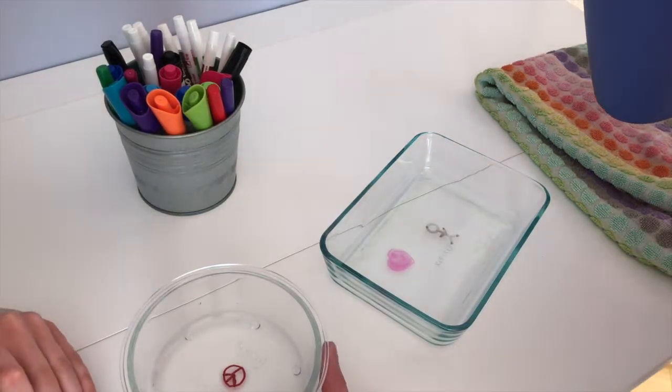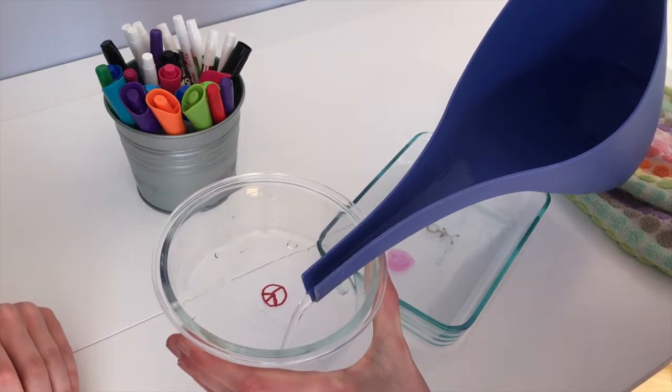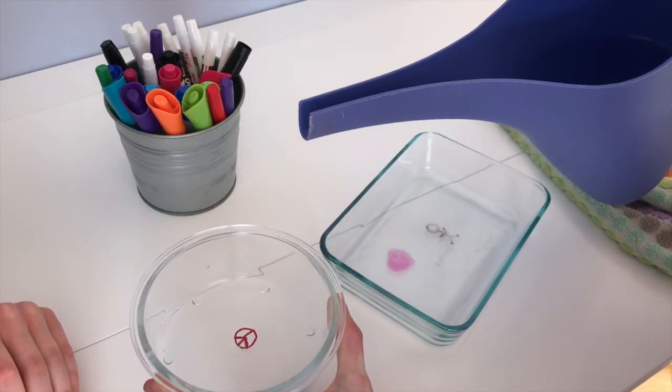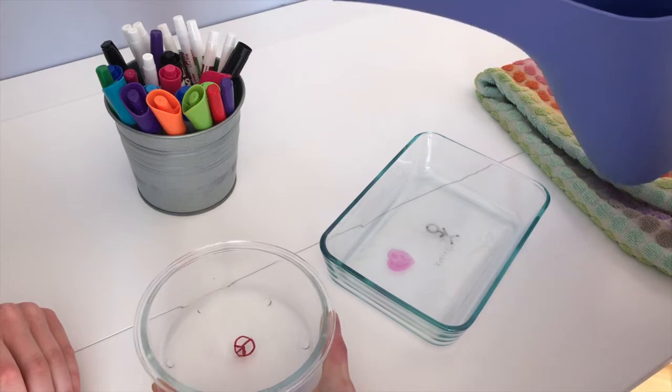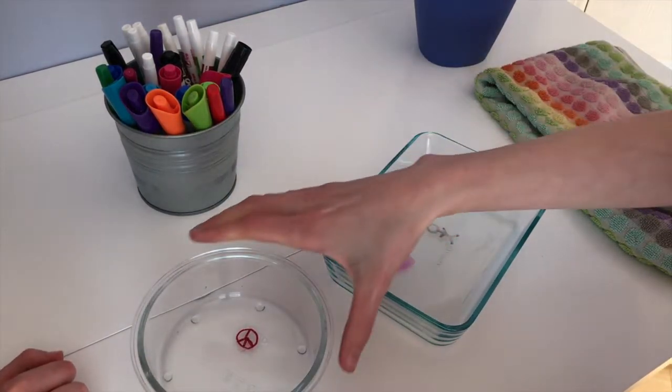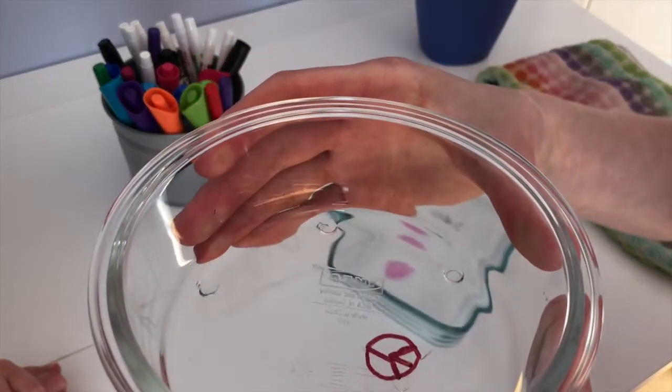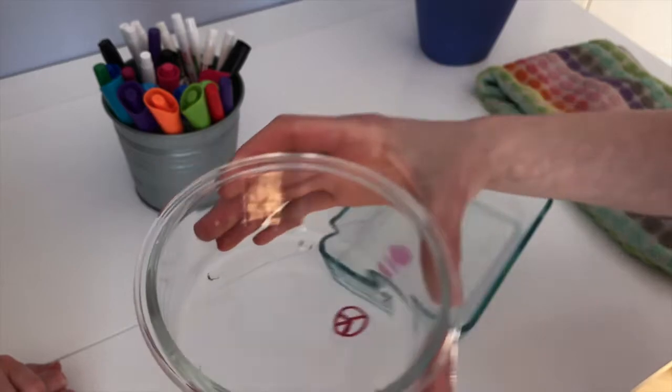And once you have your shape, we've learned to keep them all connected because otherwise if you have spaces in your shape it might not work all that well. Okay so you want to make sure that you're pouring in the water right on the edge so it doesn't get in there and mess it up.